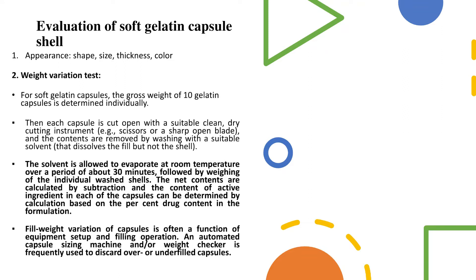The fill weight variation of capsules is a function of the equipment setup and the filling operation. Just as precise tablet weight is required for tablets, the encapsulated mass must also be within the specified range. An automated capsule sizing machine or weight checker is frequently used to discard over- or under-filled capsules. The specifications remain the same as for tablets.